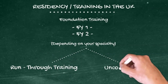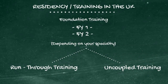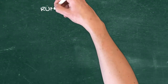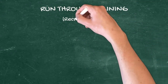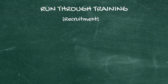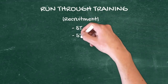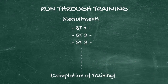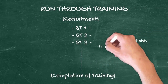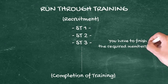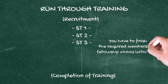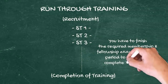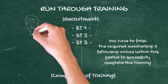One is called run-through training and another is called uncoupled training. All specialties are divided into these two types. In run-through training, recruitment happens only once and then all the years follow until you finally complete your training. ST1 stands for specialty training. For example, GP training is three years and pediatric training is seven years, and during this entire training you have to complete the required exams.